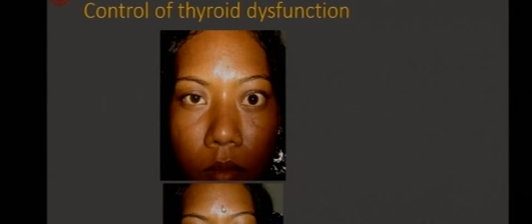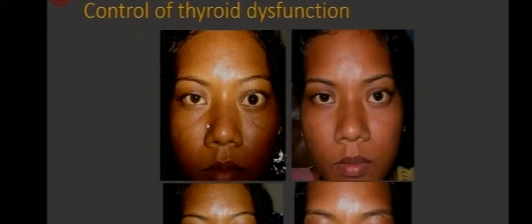Before jumping to manage this patient, it is important to control the thyroid dysfunction. This lady has upper eyelid retraction with some congestion and intermittent mild activity — some redness and congestion — which used to resolve with topical lubricants and steroids. Her thyroid was still uncontrolled. Once we controlled the thyroid status, this was the resulting picture. It actually sometimes improves the retraction. So doing surgery at this stage would not be appropriate.